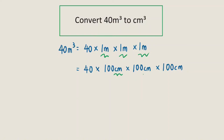And then each of the 3 cm will be combined into cm³. And then we'll use the calculator to evaluate 40 times 100 times 100 times 100, and we should get 4.0 times 10 to the power of 7 cm³.